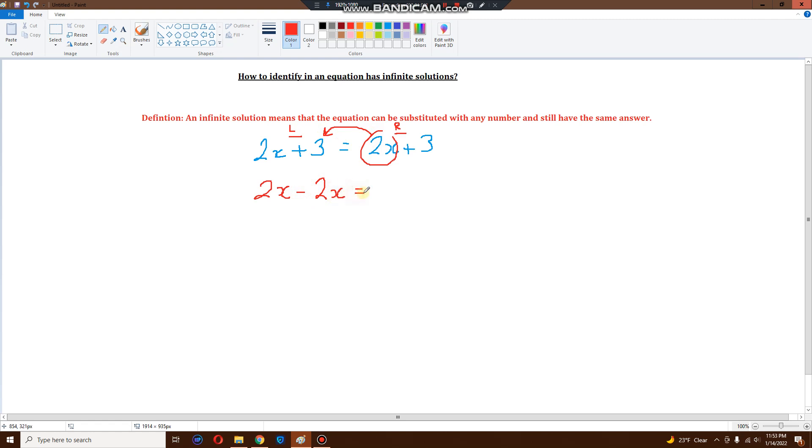Everything else stays on the right. Positive 3 is good. This positive 3 is on the left side. So it jumps across to the right and becomes minus 3. And then your 2x minus 2x is 0 equals 3 minus 3, 0. And this, as an example, is an infinite solution because 0 equals 0. So we write infinite solution.